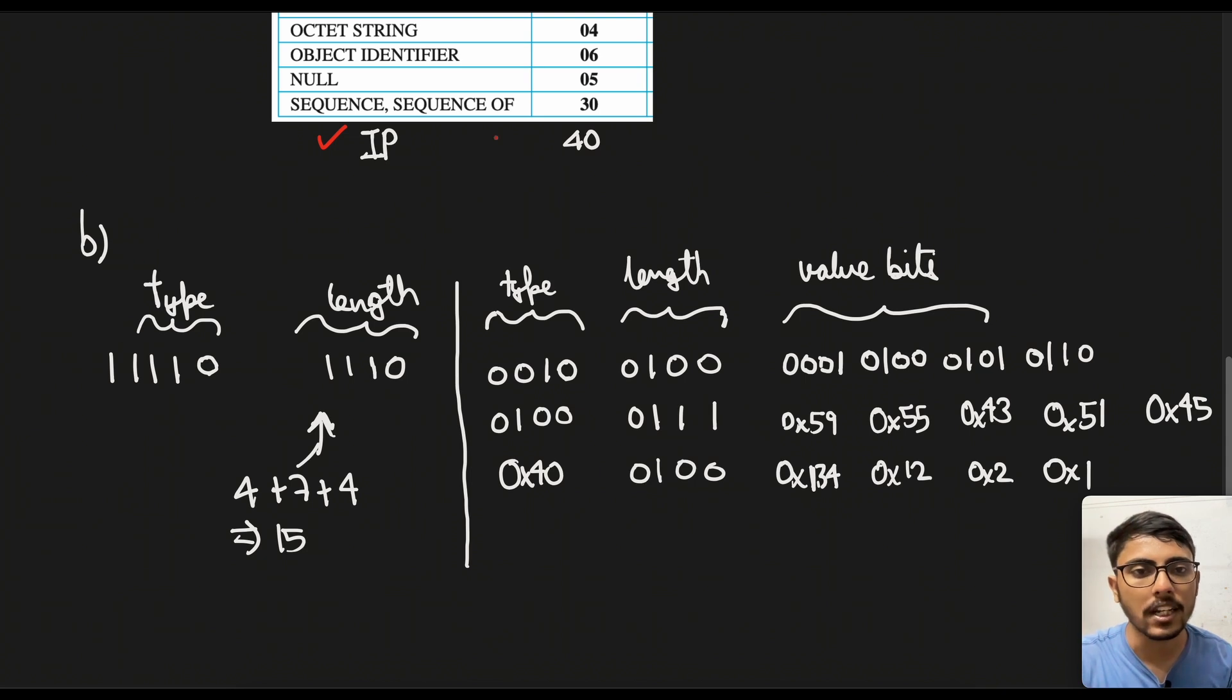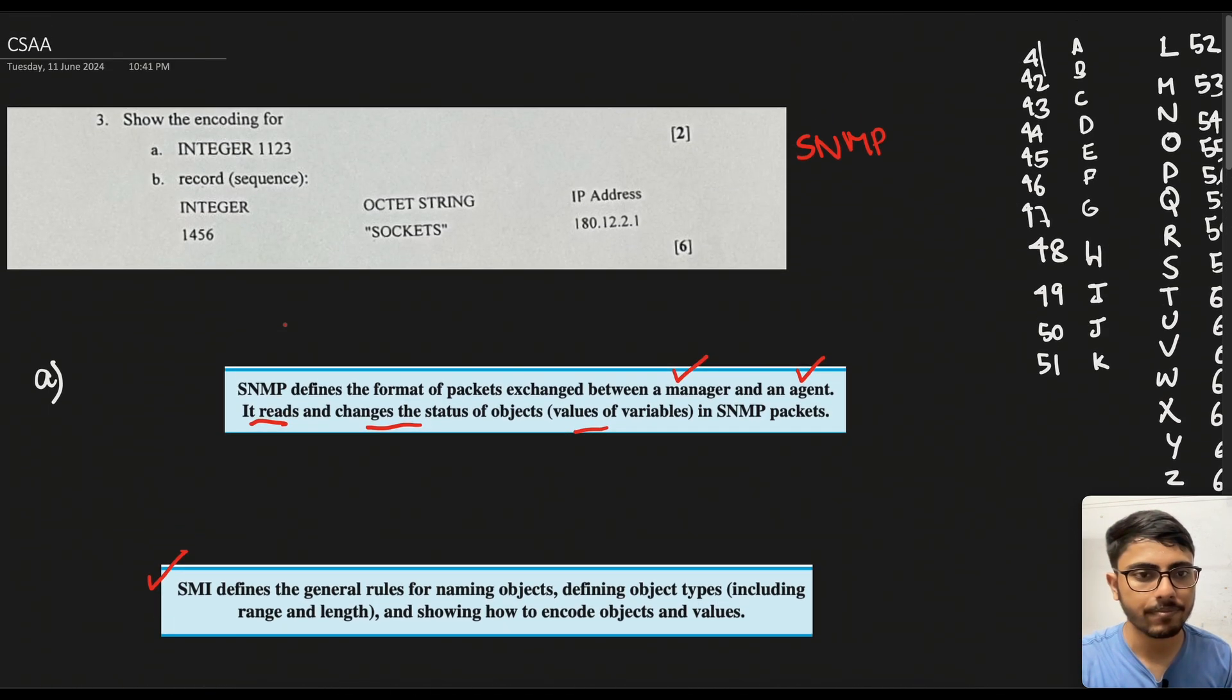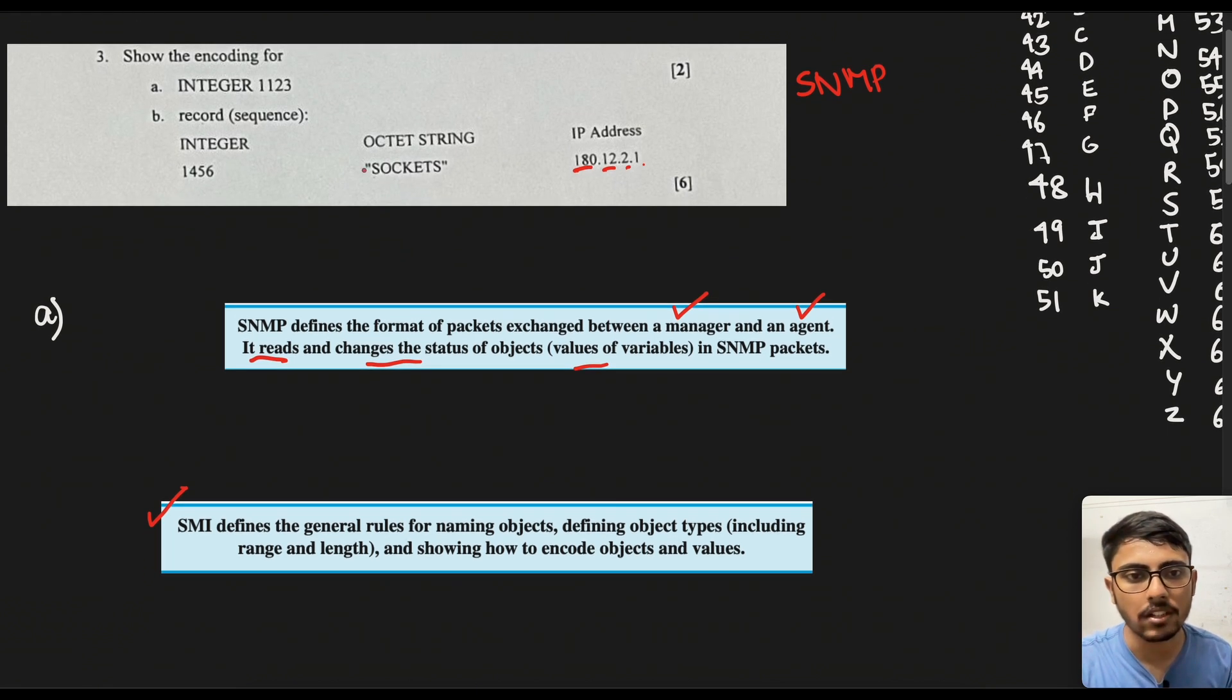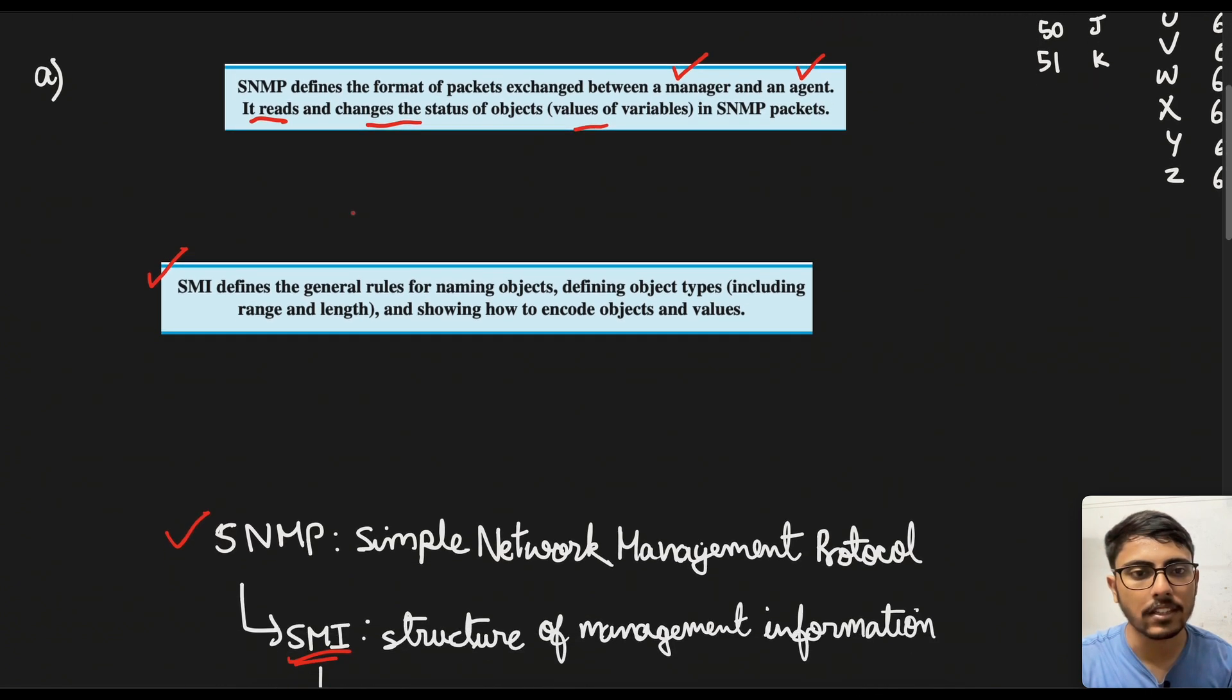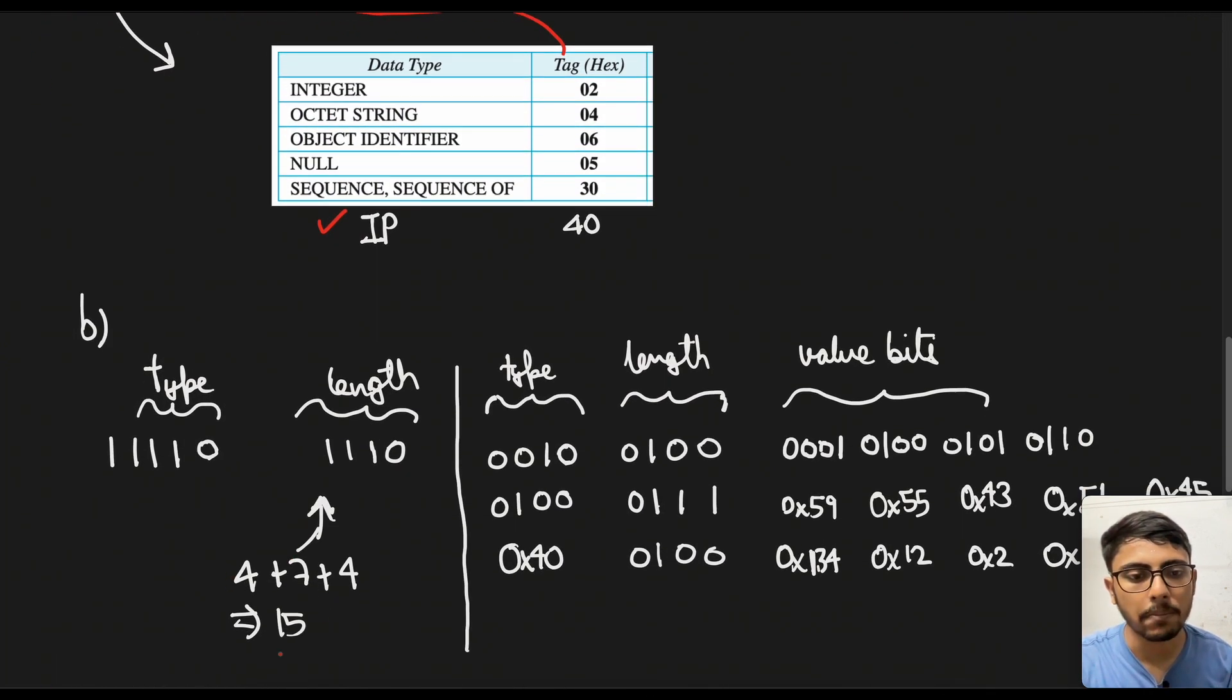So in sequence the type will be basically 30. So if 30 is converted into binary it is four 1s followed by a 0. Then we have the length. So if we go up, you see there are 4 numbers here and 4 separate integers, and then there are 7 letters here. So if you take 1 letter as 1 byte then it is basically 7 bytes. So if we just calculate the total, 4 plus 7 plus 4 which gives 15. So the length is 15.